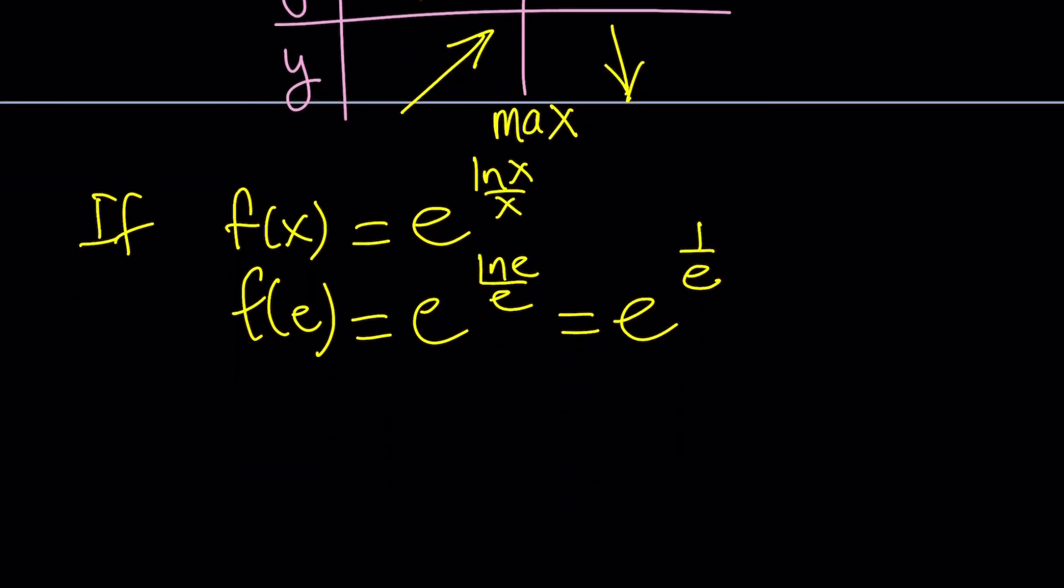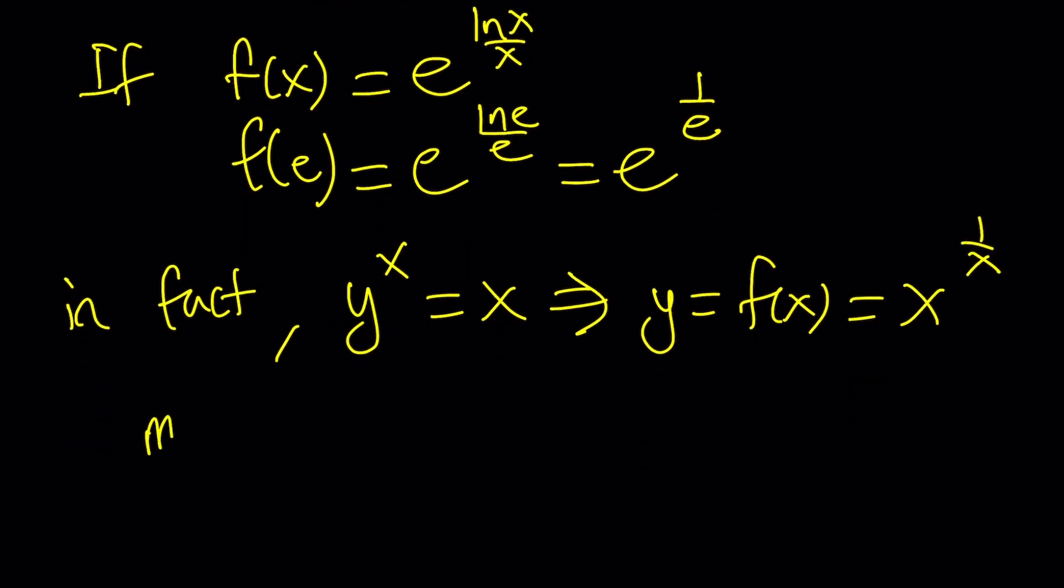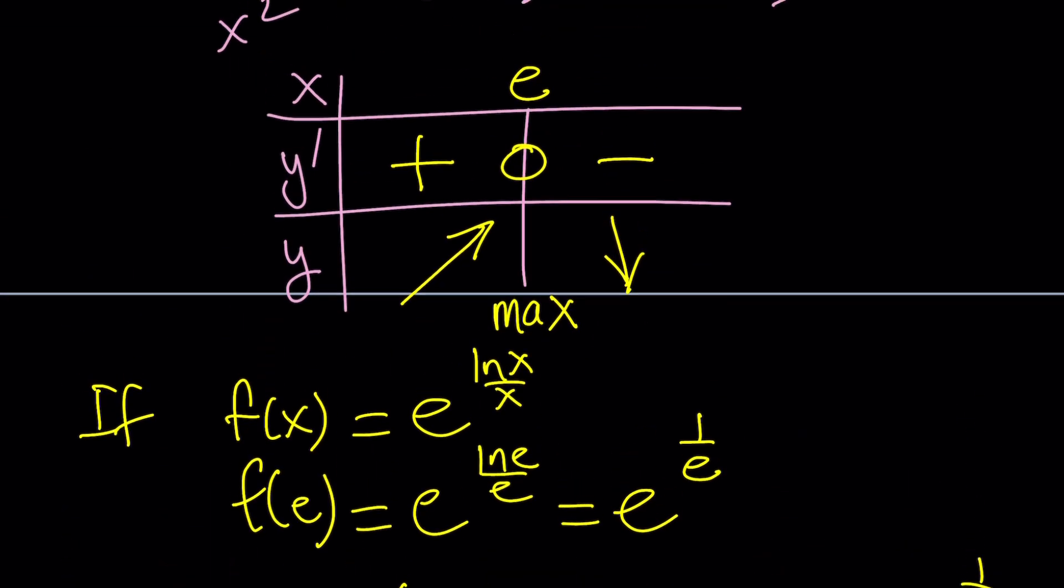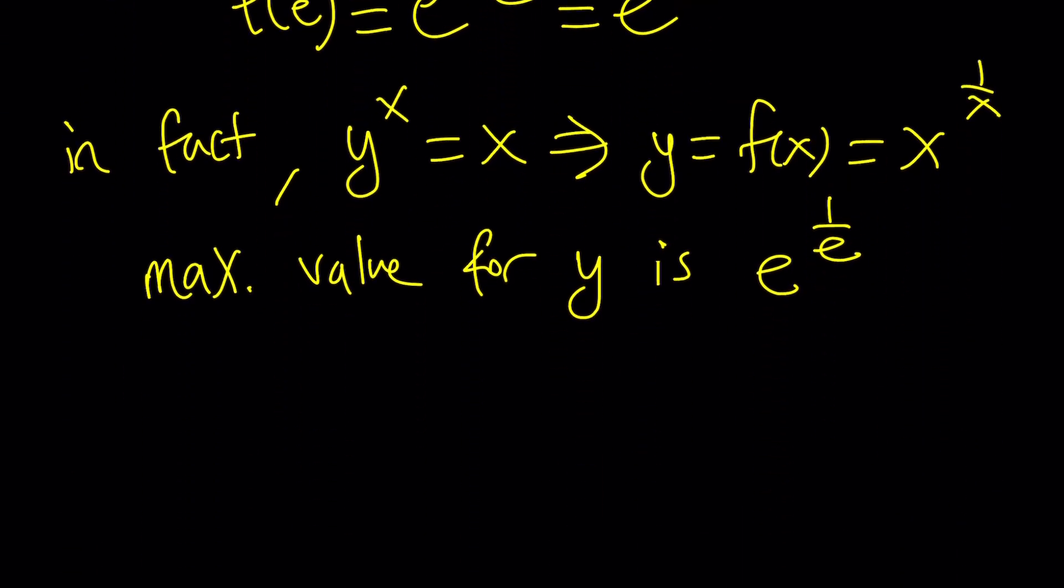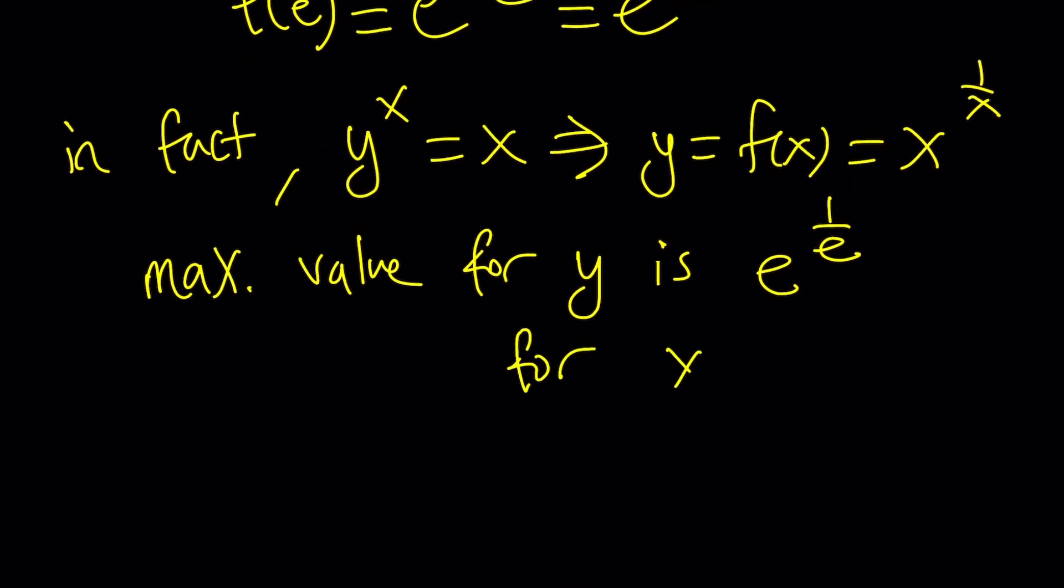Right? So in fact, we could safely say that y to the x equals x results in y equals f of x, which is x to the power 1 over x, and the maximum value for y in this case is e to the power 1 over e, as given by this table. And this happens for x equals e.